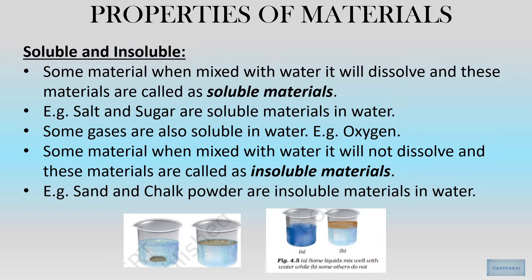Insoluble material: there are few materials which are insoluble in water. For example, sand and chalk powder — if you dissolve them in water, they will either float on the water or sink down in the beaker. That means these materials are insoluble, and with this property we can also determine the nature of a material.